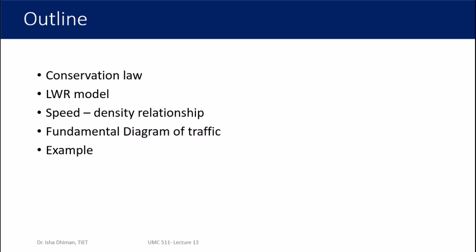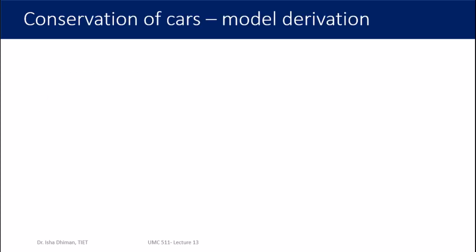In this lecture I'm going to derive the conservation law. When modeling something, the first thing we think about is identifying a quantity in the system which is going to be conserved. Once you identify the conserved quantity you can write a conservation law for the system. Then I'll be specifically talking about the LWR model, various speed-density relationships, the fundamental diagram of traffic, and then some examples.